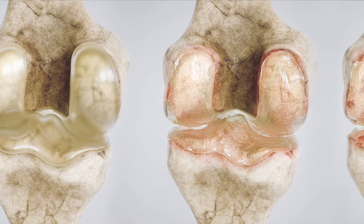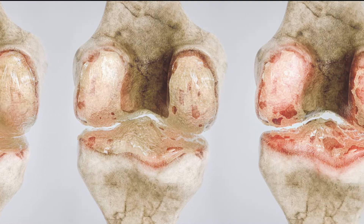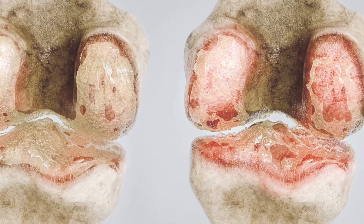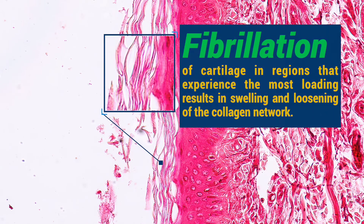I'll frame the pathophysiology from the perspective of the joint as an organ, which is comprised of articular cartilage, bone, synovium, and soft tissue. Some of the earliest pathologic changes in OA are seen at the surface of articular cartilage, with fraying and splitting — or fibrillation — of cartilage in regions that experience the most loading.